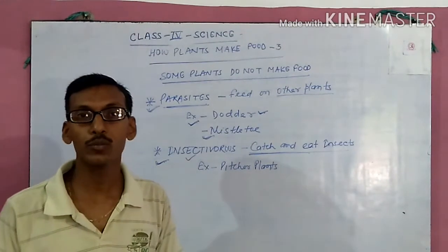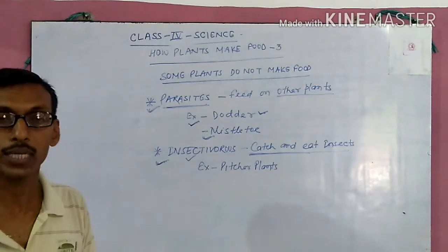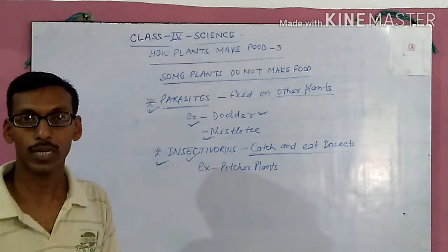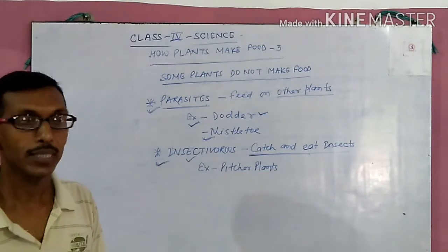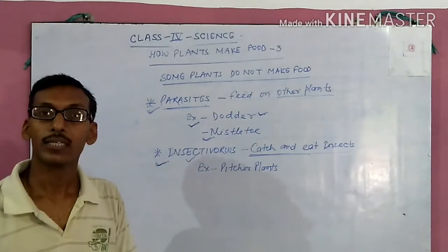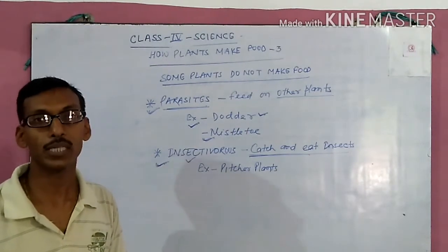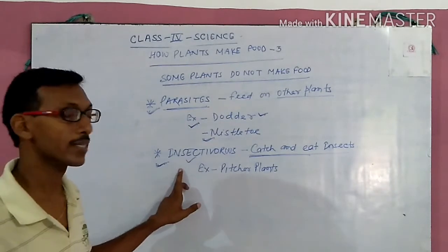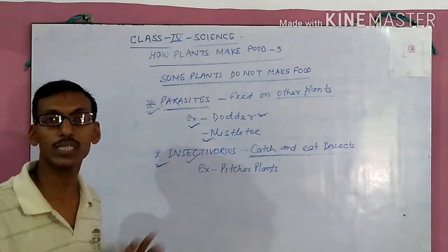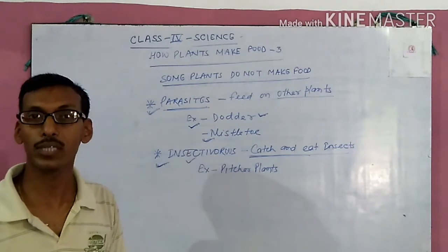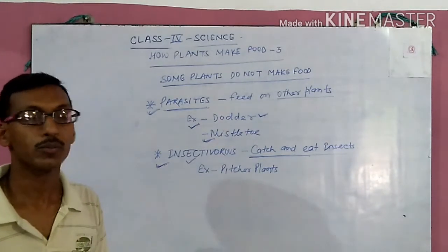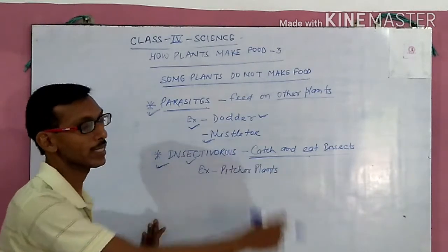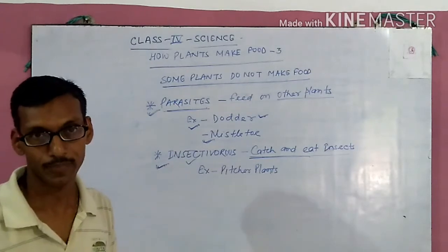Insectivorous plants are green and they are able to make their own food. They have green pigment and they prepare their own food. But they need nitrogen, which is not present in the soil where they grow. So, to fulfill the need of nitrogen, insectivorous plants catch insects.